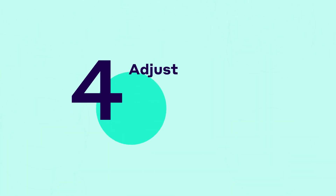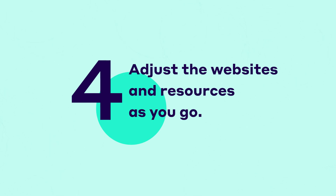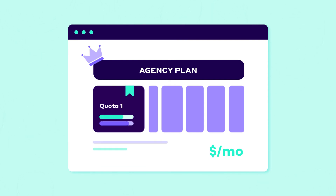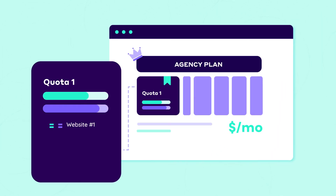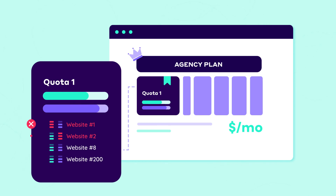You can add thousands of websites to your agency account and adjust the resources as you go. You can also create quotas for specific sites. Quotas let you allocate monthly page views and CDN bandwidth to a website or websites. That way, you can prevent one site from using up most or all of your subscription's resources. For now, quotas aren't generally available — you can ask our support team and they'll enable the option for you.